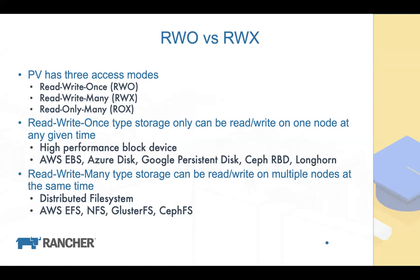ReadWriteOnce storage is most likely high-performance block storage — like AWS EBS, Azure Disk, Google Persistent Disk, Ceph RBD, and Longhorn. A block device can only be attached to one node and cannot have its contents modified by multiple nodes simultaneously. ReadWriteMany storage is most likely a distributed file system, such as AWS EFS, NFS, GlusterFS, and CephFS.